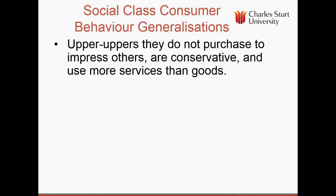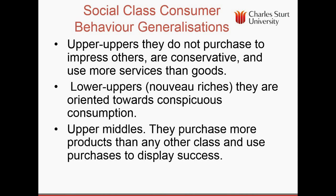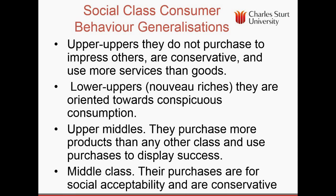Given these limitations, what has research suggested about social class and consumer behaviour? This research goes back 30–40 years and results seem fairly stable. The established social class — old money — don't purchase to impress others; they're conservative and use more services than goods, such as gardening services. The nouveau riche are oriented towards spending to show success — we call this conspicuous consumption. Upper middles are more interested in products that display class or status symbols, and use purchases to display success. Those below are more about social acceptability and tend to be more conservative.